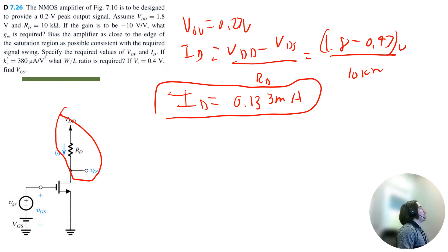If KN prime equals 380 microamps per volt squared, what W divided by L ratio is required? So we can use the saturation equation for our drain current because we know that this transistor is in the saturation region, it's at the edge of saturation. So that's going to be 0.5 KN prime times W divided by L times V overdrive squared. Now we just need to solve for W divided by L.